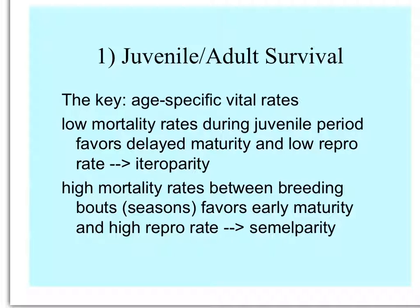The first thing to consider is juvenile versus adult survival and how age-specific vital rates can affect little r. If there are low mortality rates when organisms are young, delayed maturity is favored, reproducing modestly over a long period of time — this leads to iteroparity. On the other hand, if there are high mortality rates for organisms of all ages between breeding seasons, early maturity and a high reproductive rate is favored, with no selection for surviving another year — semelparity is favored, also called big bang reproduction.